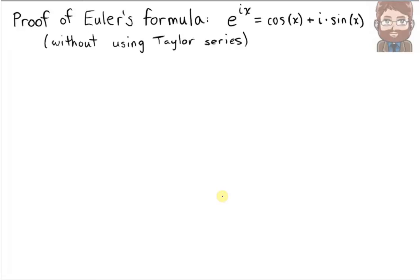Here is a proof of Euler's formula without using Taylor series. Our key assumption in this proof is that the results of differential calculus, such as the product rule and chain rule, hold true for functions that involve complex numbers. So on with the proof.